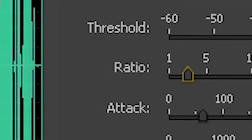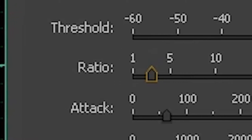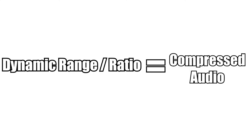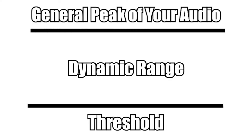How drastically your audio is affected is where we get the ratio. Basically, the ratio is a division of the dynamic range of your audio. Dynamic range is the range between what you set your threshold at and the general peak of your audio.